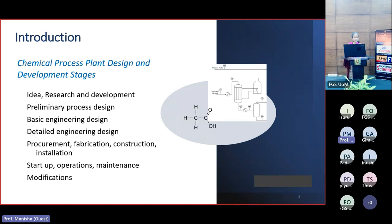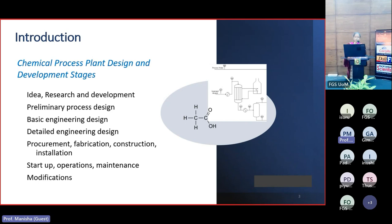In the preliminary process design stage we identify process alternatives and develop the basic process flow diagram. In the basic engineering design stage we identify the major unit operations and estimate the material and energy balance. From the data available, the process instrumentation diagram and plant layout are also designed, and the detailed process flow sheet is developed.